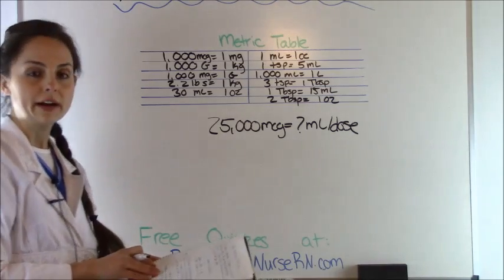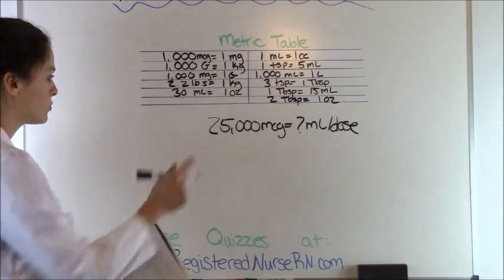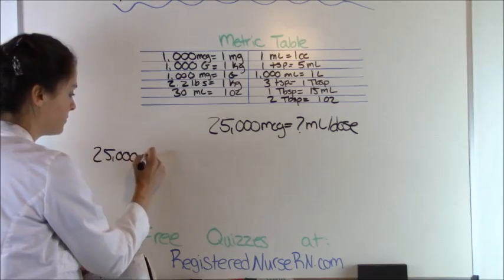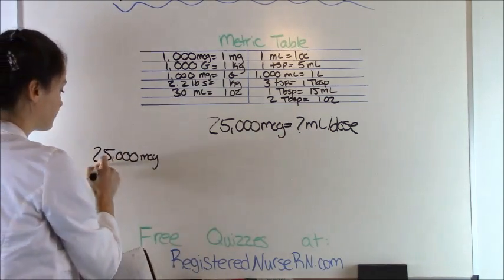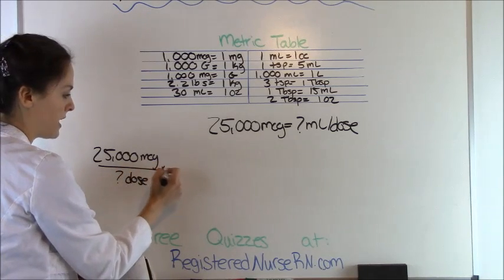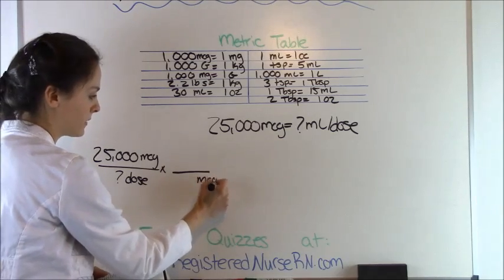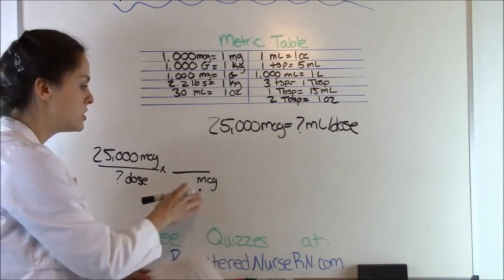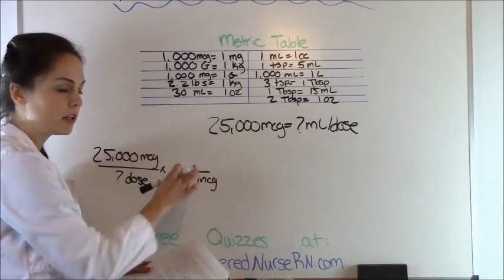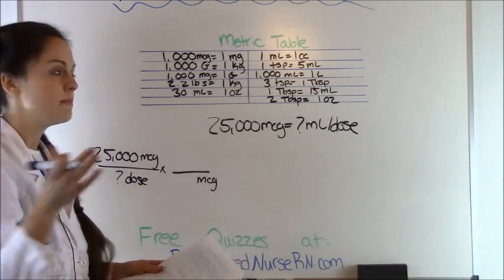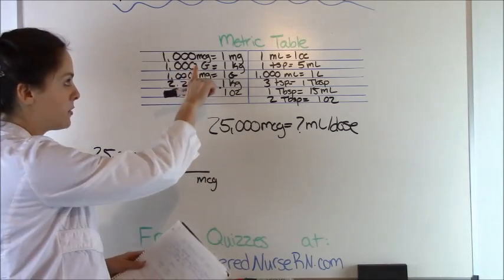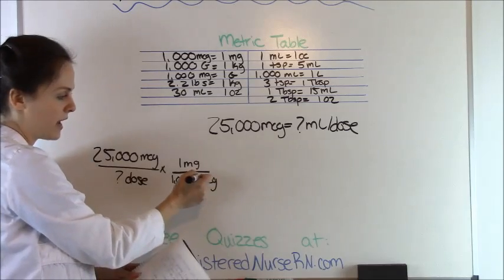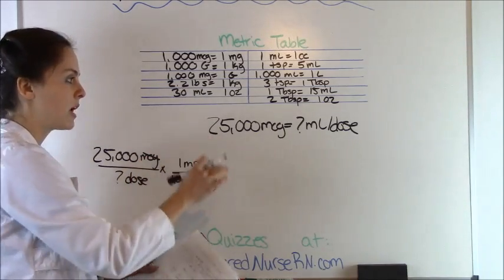The very first thing in dimensional analysis is to start with what the doctor ordered: 25,000 micrograms goes on top and we are trying to get to milliliters per dose. Working diagonally, we move micrograms down. This is where we use the metric table — from memory or reference, we know there are 1,000 micrograms in one milligram. So 1,000 micrograms goes on the bottom and one milligram on top. Micrograms cancels out and now we're in milligrams, trying to get to milliliters.